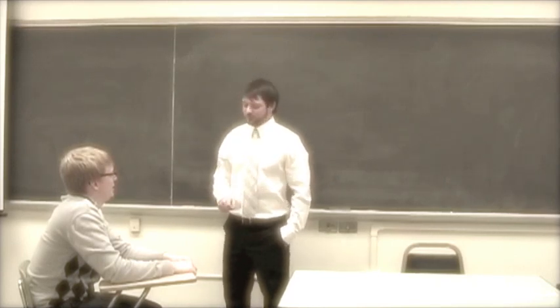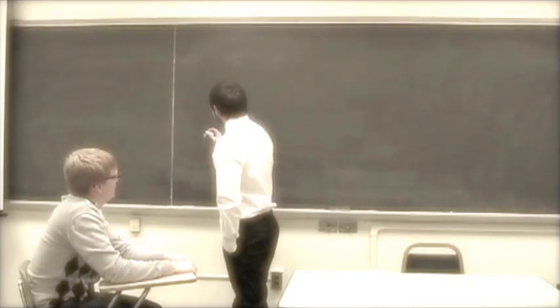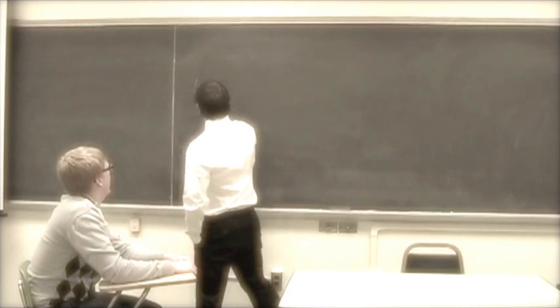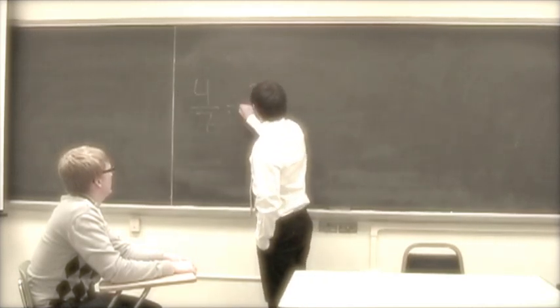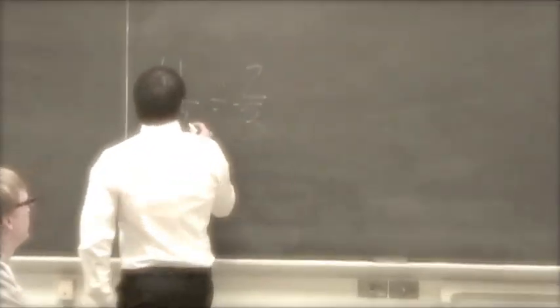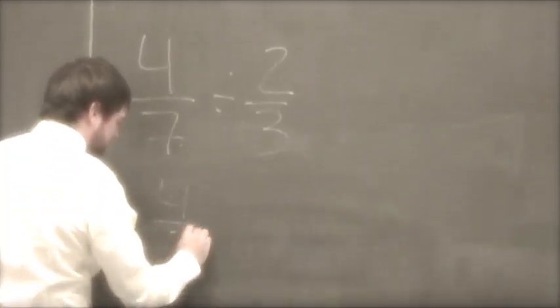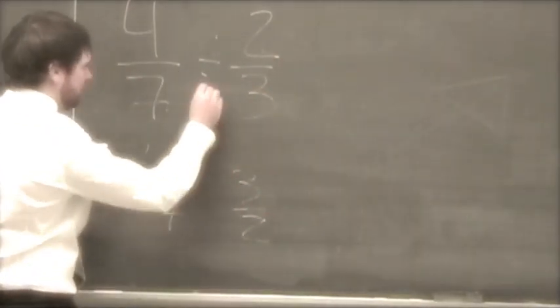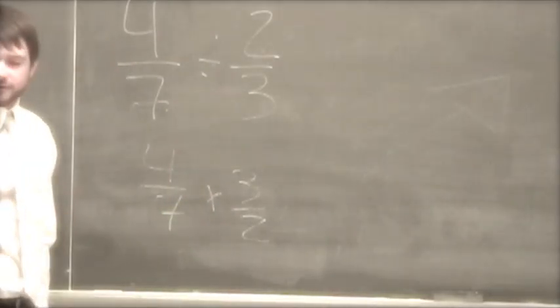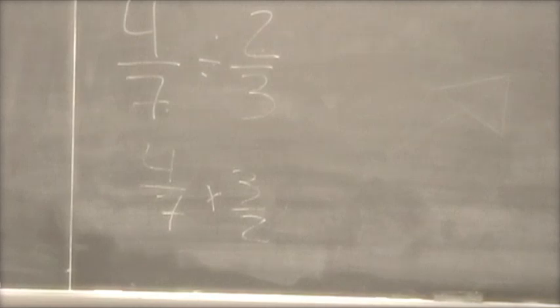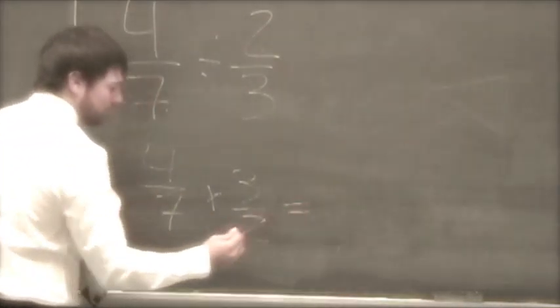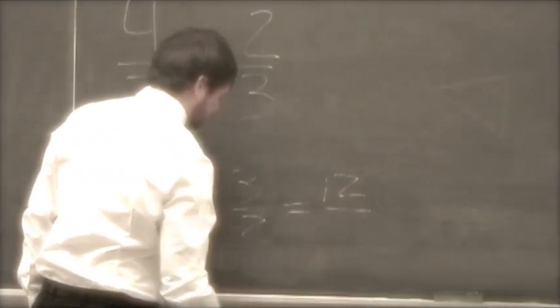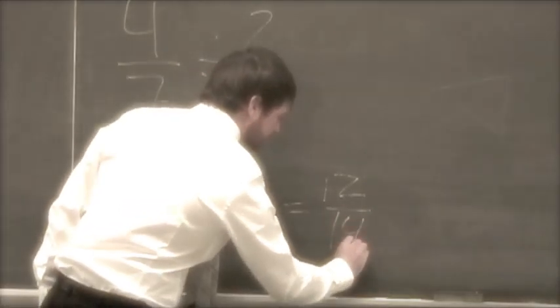What? Let me show you. What's the problem you're having trouble with? Four over seven divided by two-thirds. Okay. So, we're gonna keep our first fraction the same. Four over seven. We're gonna flip the second. Then we're gonna multiply. Now, do you remember how to multiply fractions? Yeah. You just top by top, bottom by bottom. Very good. So what would our answer be? Twelve over fourteen. Very good.